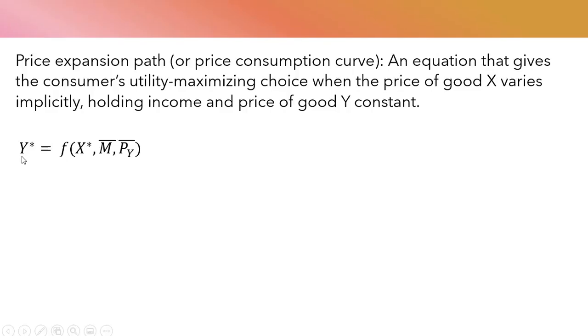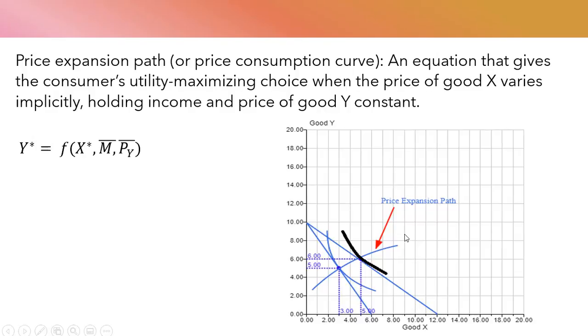So the utility-maximizing choice of good Y, Y star, is a function of X star, the utility-maximizing choice of good X, holding income and the price of good Y constant. It's easiest to understand this concept with a graph.